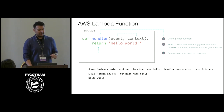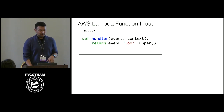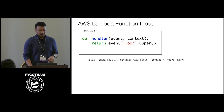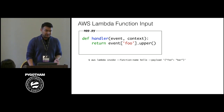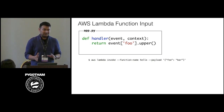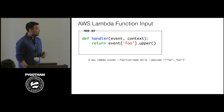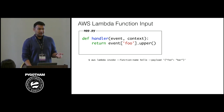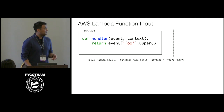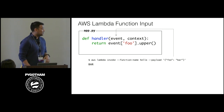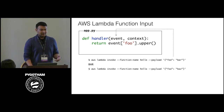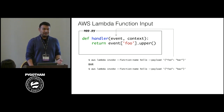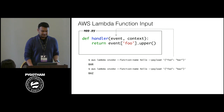If we want to map input parameters, we use that first argument — the event arg. We provide a payload, which is just an arbitrary JSON blob, say foo and bar. Here we're going to take the value associated with the foo key, uppercase it, and return it. And we'll get 'BAR.' With a different input we can get a different result.